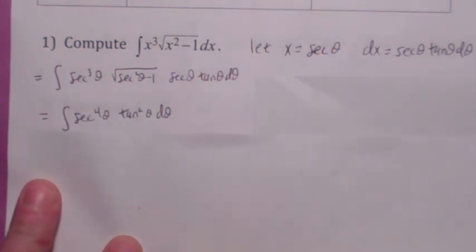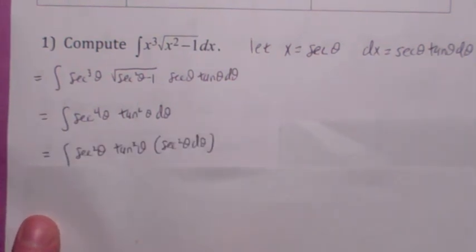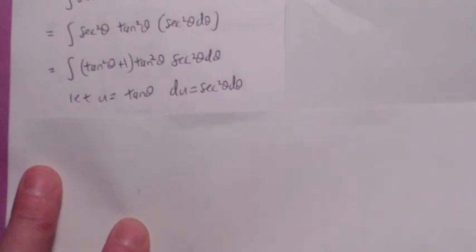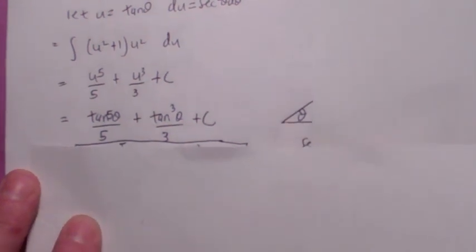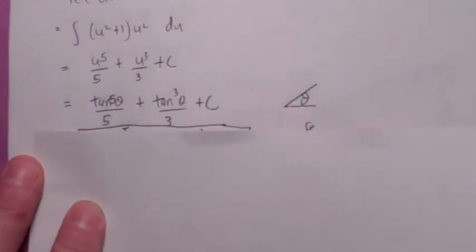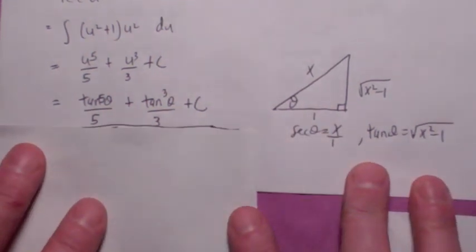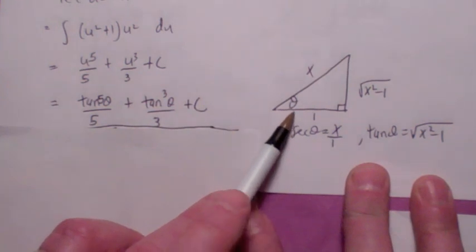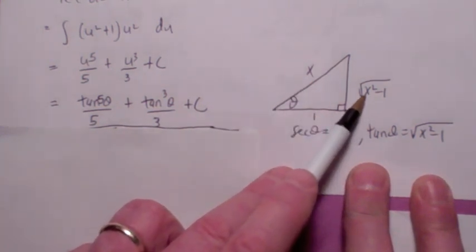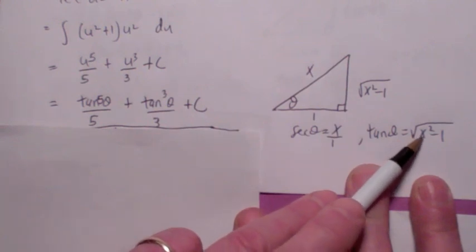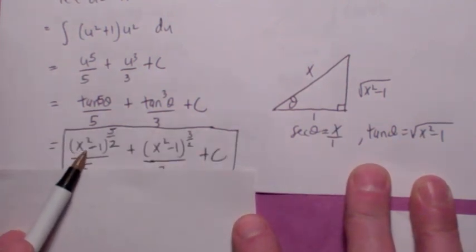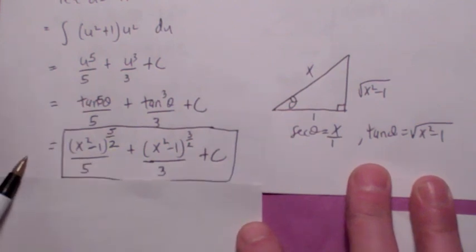That integral looks familiar. Since secant is even, you pull off a secant squared, then write everything else in terms of tangent. Now make the substitution u equals tangent theta, du equals secant squared d theta. The integral simplifies, and then you switch back in terms of x. First go back in terms of theta. For the back-substitution, since x equals secant theta, draw a triangle where secant theta equals x over 1, making the opposite side the square root of x squared minus one. So tangent theta equals the square root of x squared minus one, and you substitute that in wherever tangent appears.